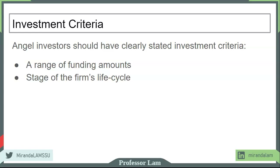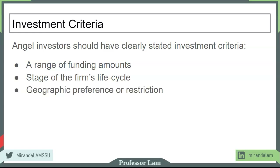Another criterion is the stage of your firm's life cycle. Angel investors may be willing to invest in a very early stage where you just have a proof of concept or a patent, while a venture capital firm may want to see revenue and a customer base before investing. Most investors may have a geographic preference, but more likely they'll have an industry preference. It's not true that only high-tech firms can get angel investors or venture capital — some specifically invest in areas like manufacturing or customer-service-oriented businesses.